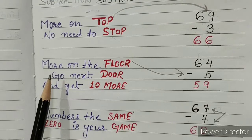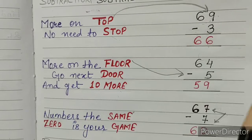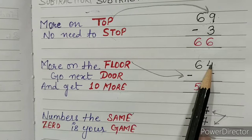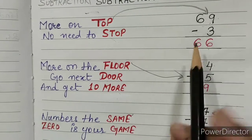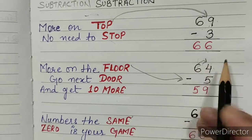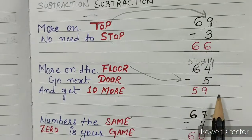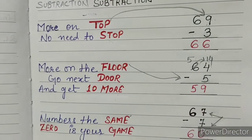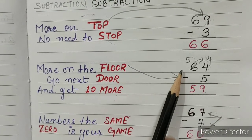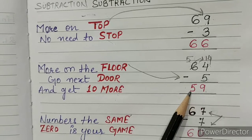Rule 2: More on the floor, go next door and get 10 more. In 64 minus 5, the 5 is larger than 4, so we need to borrow from the tens place. The 4 becomes 14 and the 6 becomes 5. Now 14 minus 5 is 9, and we bring down the 5, giving us 59.